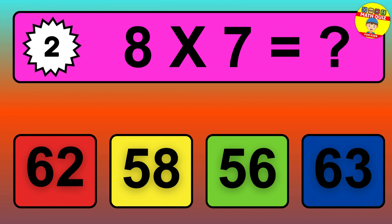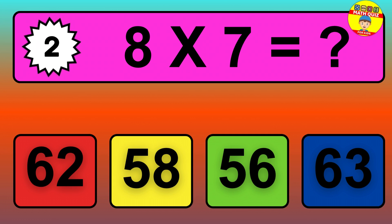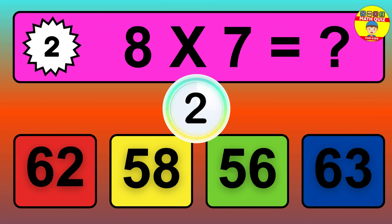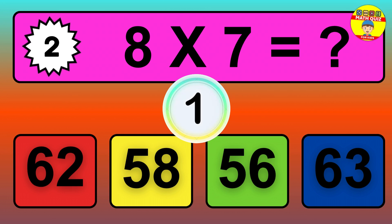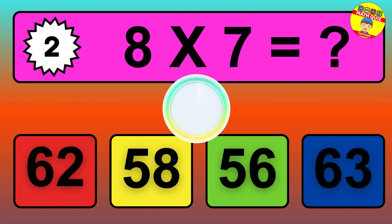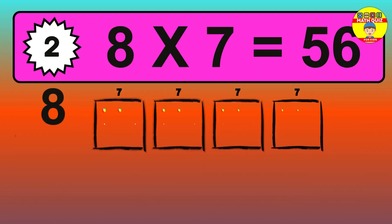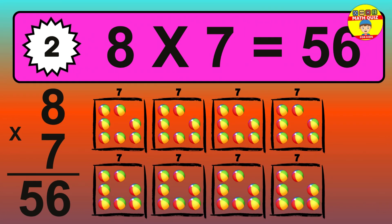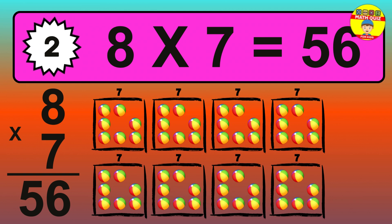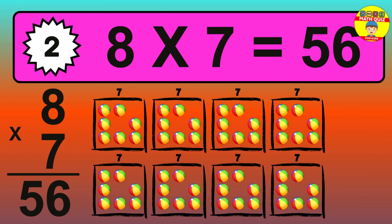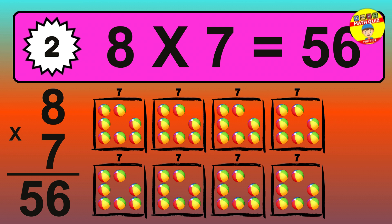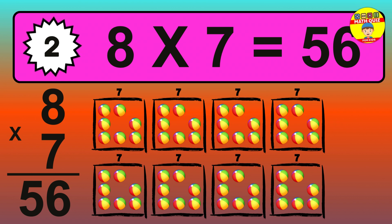Question 2. 8 times 7 equals what? The answer is 8 times 7 is 56. To calculate, we have 8 groups with 7 balls each one. So, how many balls do we have? 56 balls.